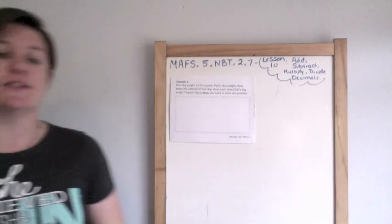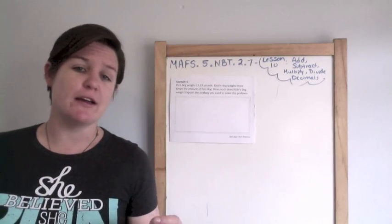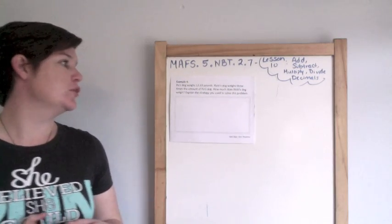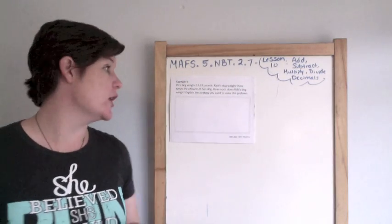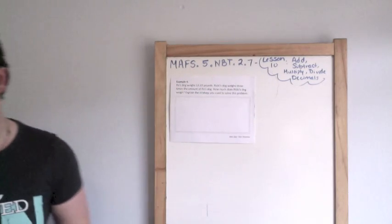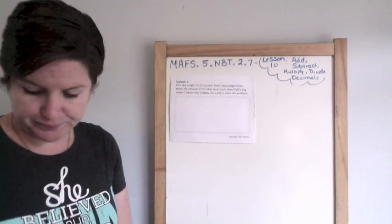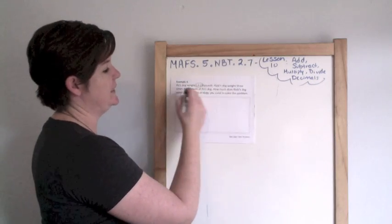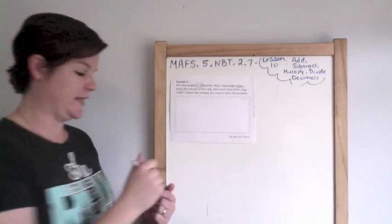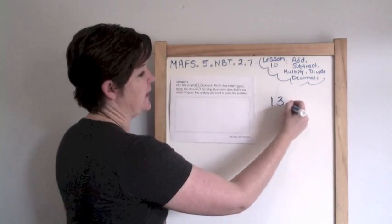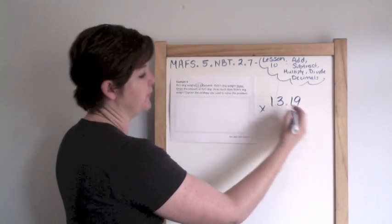Okay, last one for this standard. It's example 4. It's a word problem and that's okay. You will survive. Po's dog weighs 13 and 19 hundredths pounds. Ricky's dog weighs three times the amount of Po's dog. How much does Ricky's dog weigh? Explain the strategy that you used to solve this problem. Okay, well, I see that Po's dog weighed 13.19 and Ricky's dog weighed three times that. That means I need to multiply this three times. 13.19 three times or 13 and 19 hundredths three times.